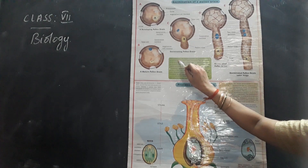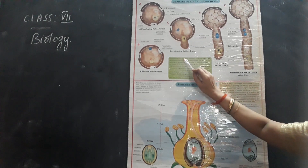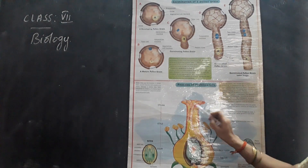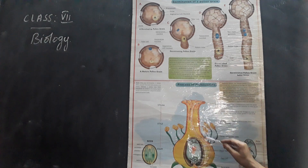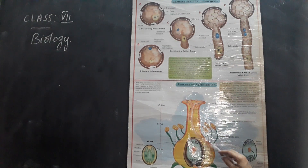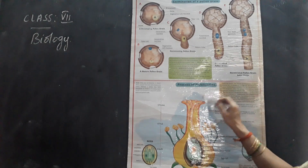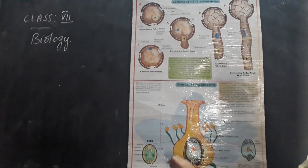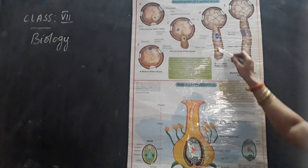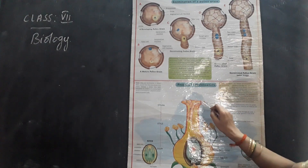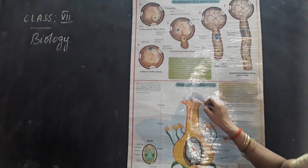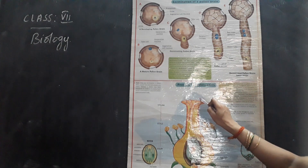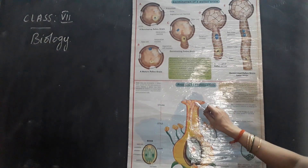After pollination, the stigma nourishes the pollen grains. When the pollen grains fall over the stigma — this is the stigma, the structure of the female reproductive part consisting of ovary, style, and stigma — there are some sticky substances present on the stigma which help the pollen grain to germinate. So the germination of the pollen grain takes place over here.